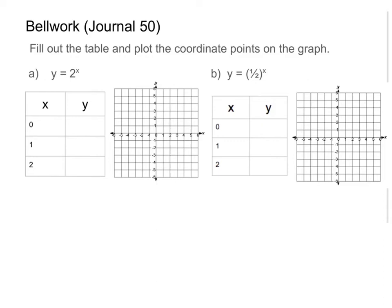In this bell work we are going to be looking at two equations: 2 to the power of x, and one half to the power of x. You're going to be filling out these tables — I've already pre-selected the x values you'll be plugging in — and then you'll find the y values. This table will help us get coordinate points so we can plot them and see what the graph looks like.